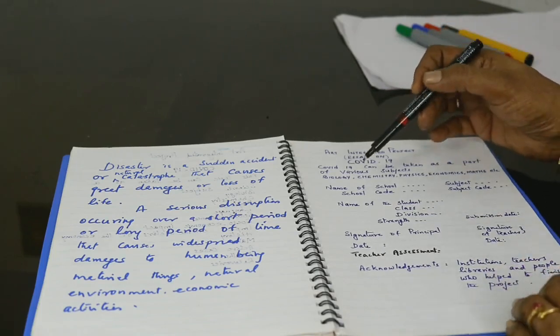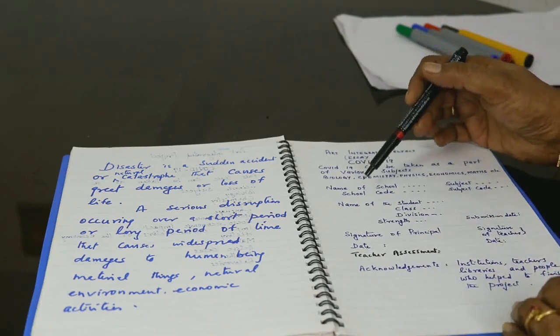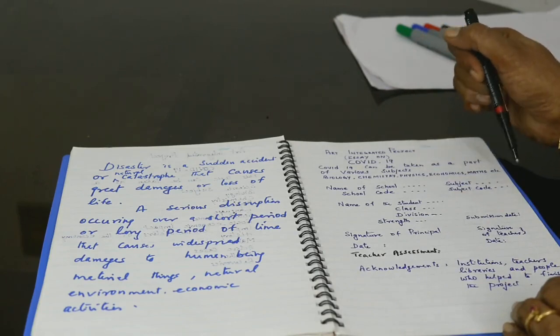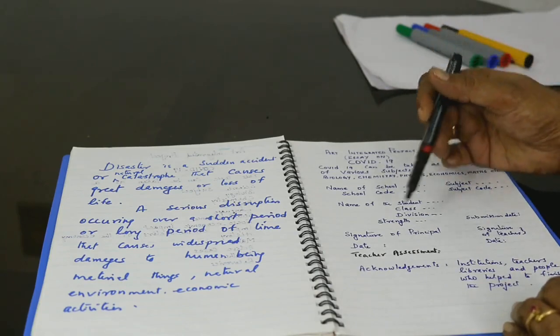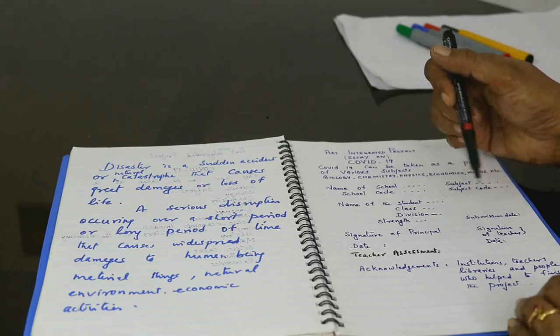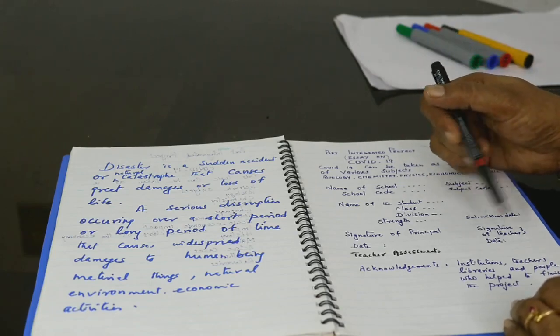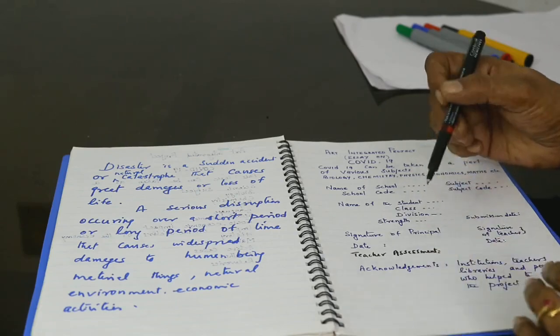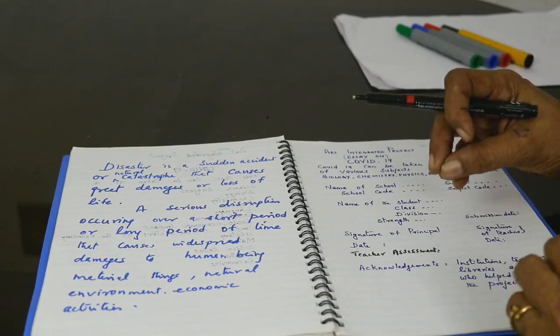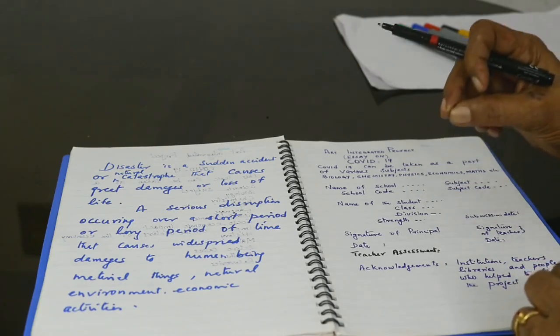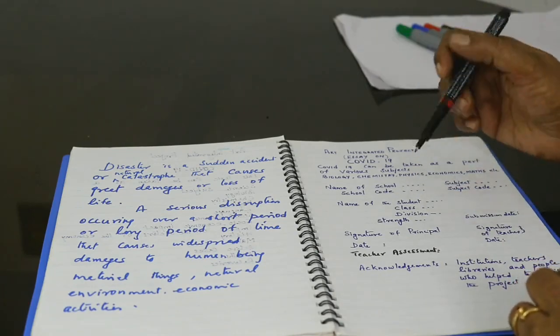In the first page we can write name of the school, school code, subject, subject code, name of student, class, division, strength, signature of principal, date, signature of teacher, date, then teacher assessment. According to the subjects, teacher assessment, the data or the marks have been divided, mark allotment has been given.